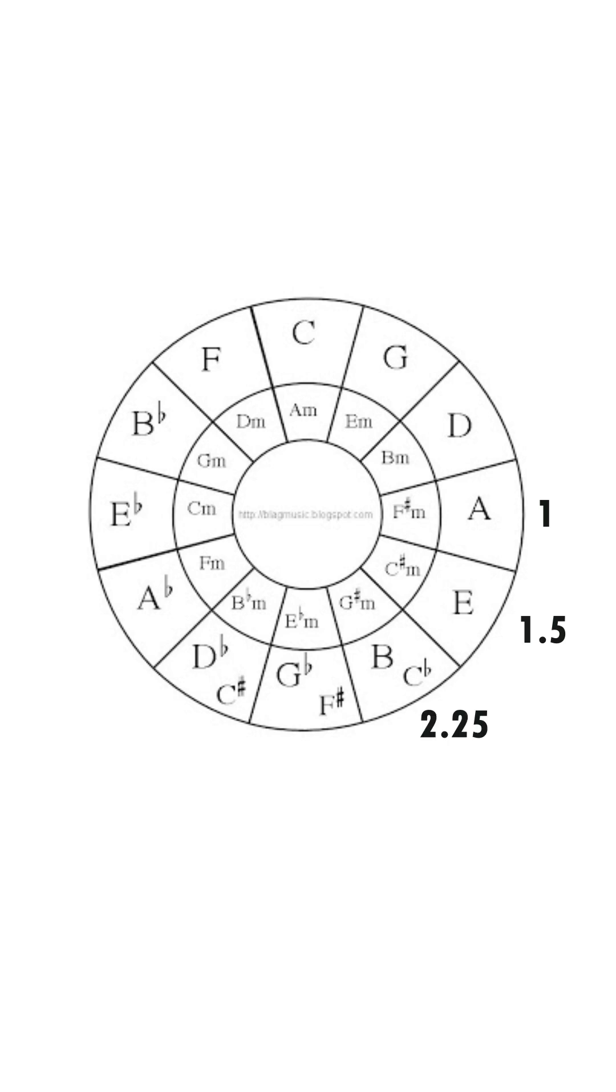You'll notice that 9 over 4 is above the octave. So to bring it back within the octave, we'll lower B by an octave by halving it, giving us B equals 9 over 8. We will repeat this process of multiplying and halving until we reach halfway through the circle of fifths.